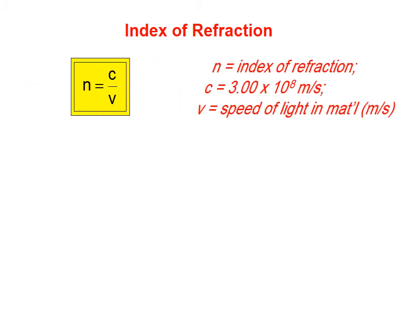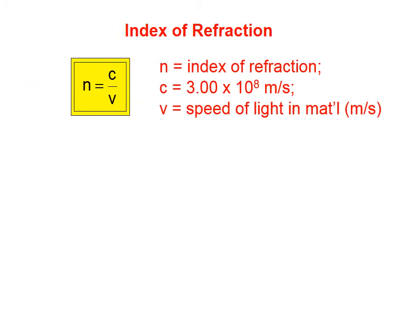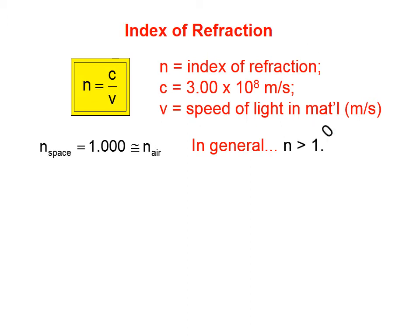The index of refraction is a ratio of the speed of light through empty space, which we know to be 3 times 10 to the 8th meters per second, compared to its speed through a transparent medium, such as water, or mineral oil, or glycerin. In this series of lessons, I'm going to consider the index of refraction of air to be approximately equal to that of empty space, namely 1.